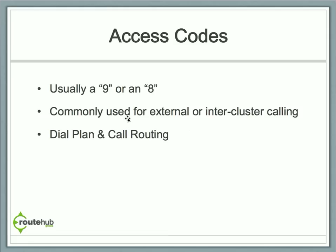Access codes are usually a 9 or an 8, though they can be any number. They are commonly used for external or inter-cluster calling. For example, if you are internally within your company and want to place a call outside, you would dial 9 first, then the full phone number. That matches a route pattern on the Call Manager system, which knows how to route the call to the appropriate voice gateway and PSTN network.